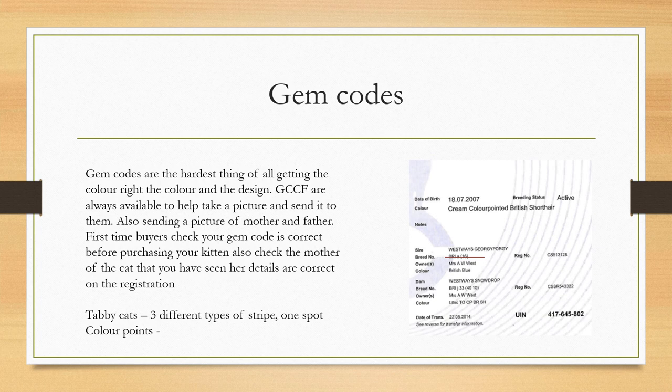For first-time buyers: you need to check your gem code, take pictures of the mother and the father, take pictures of the kitten, and research your kitten's alleles. Make sure your registration shows the correct gem code before you finally pay.